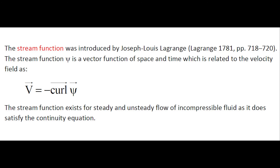The stream function, introduced by Joseph Louis Lagrange, is a vector function of space and time, which is related to the velocity field such that the velocity vector equals the curl of the psi stream function vector. The stream function exists for steady and unsteady flow of incompressible fluid because it satisfies the continuity equation.